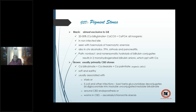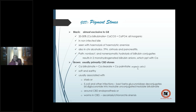Black stones: 20–30 percent calcium bilirubinate, calcium carbonate, and calcium phosphate — inorganic stones. Seen in non-infected bile, hemolytic anemia, chronic alcoholics, total parenteral nutrition, cirrhosis, and pancreatitis. Pathology: non-bacterial, non-enzymatic hydrolysis of bilirubin conjugates results in bilirubin anions combining with calcium to form calcium carbonate, phosphate, and bilirubinate. Brown stones are organic salts — calcium bilirubinate is common to both black and brown, but brown also contains calcium stearate and calcium palmitate.